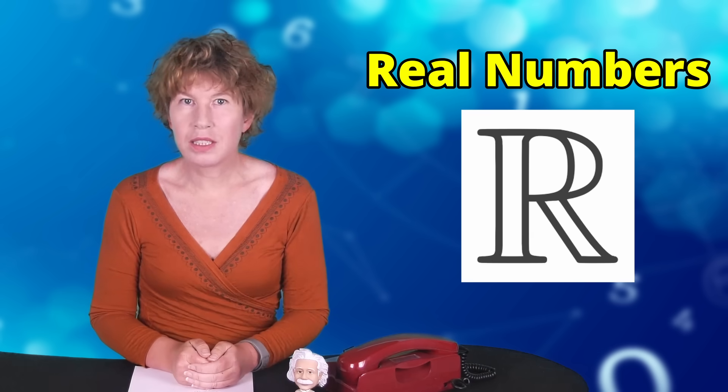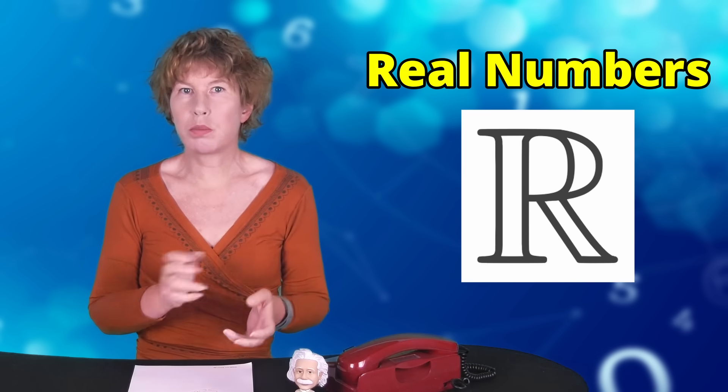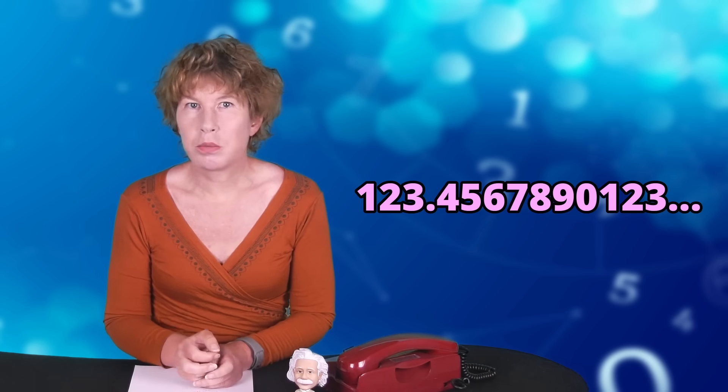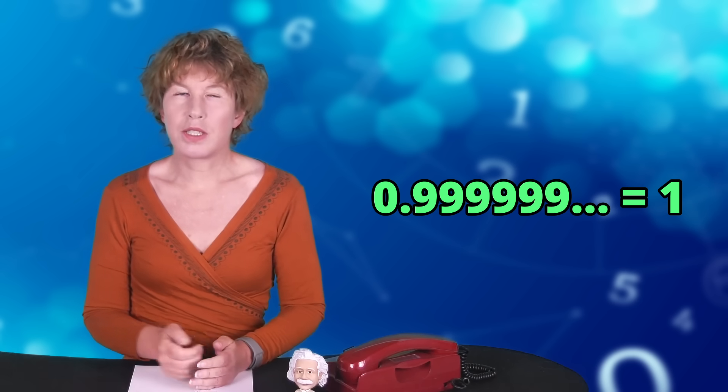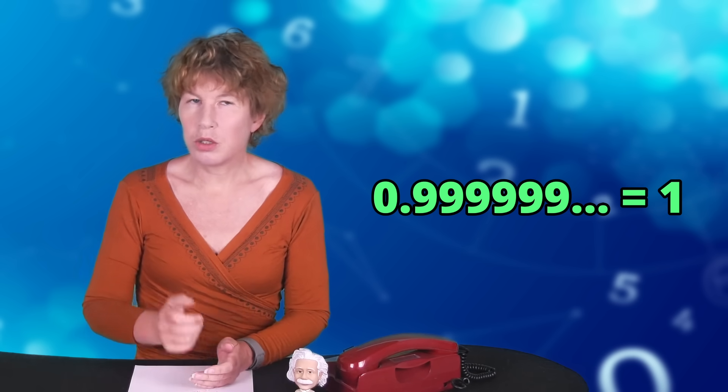We're used to working with real numbers, where we have some digits before the point and then possibly some after the point and all the way to infinitely many digits. In the real numbers, 0.999 and an infinite number of 9s is equal to 1, but you already knew that.